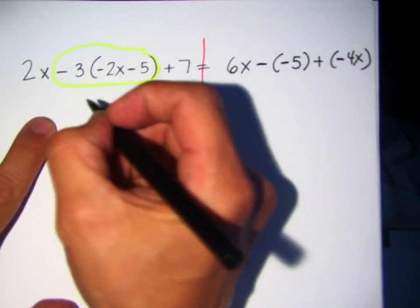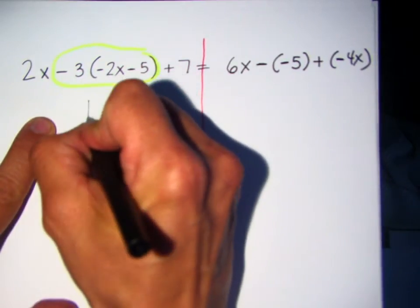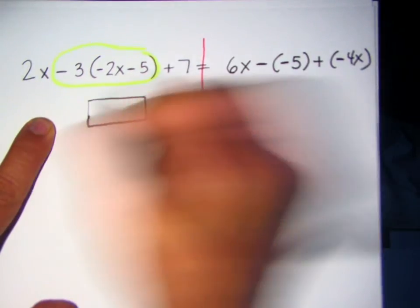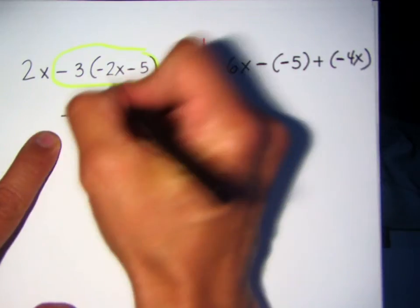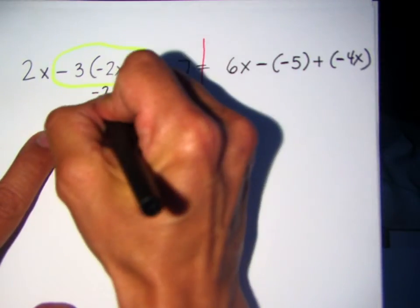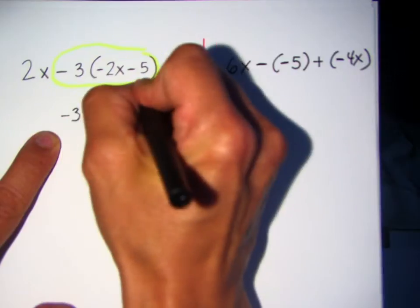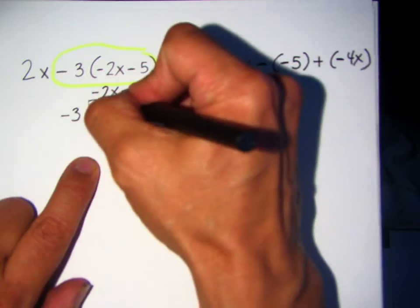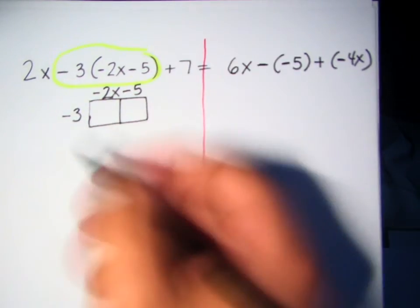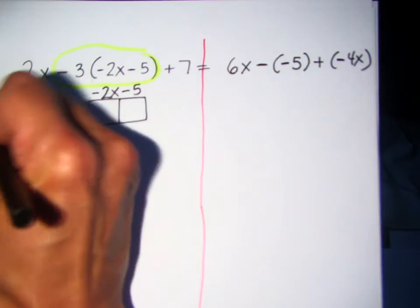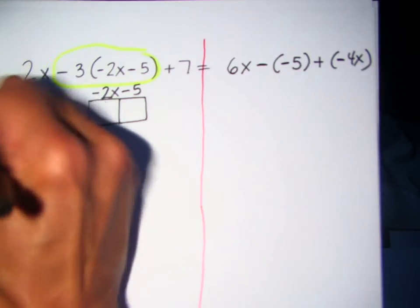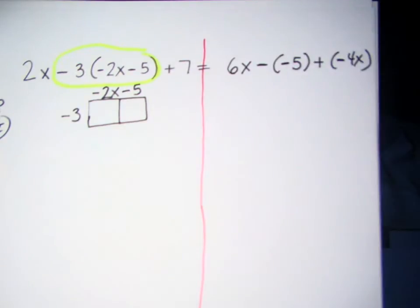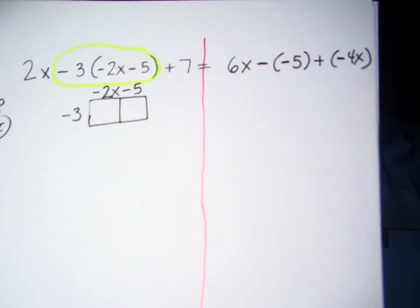So now I'm going to do the area model. What am I going to draw? I'm going to draw the box. And right here I'm going to put negative 3, and then I'm going to write negative 2x minus 5. Then I'm going to draw the little box, remember, this is a distributive property. And I'm going to do the little face — it's all about the face.